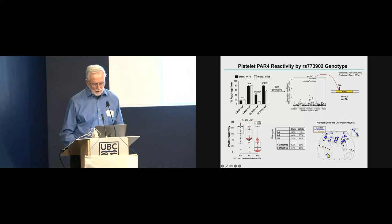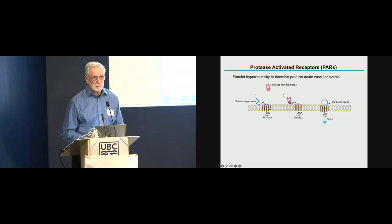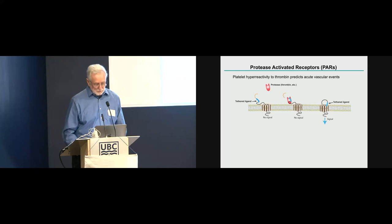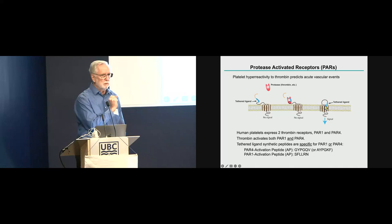A word on PAR4 receptors. Most of you know this. They are G-protein-coupled receptors, seven-transmembrane proteins. When not activated, no signal. But when a protease — such as thrombin, cathepsin G, or other proteases — binds to the extracellular domain, it cleaves off the N-terminus, creating a new N-terminus called the tethered ligand, which folds back onto the extracellular domain of the PAR and signals via G-proteins. Human platelets express two thrombin receptors: PAR1 and PAR4. The problem with dissecting the two is that thrombin activates both, but synthetic peptides from the tethered ligand enable you to probe one receptor and not the other.